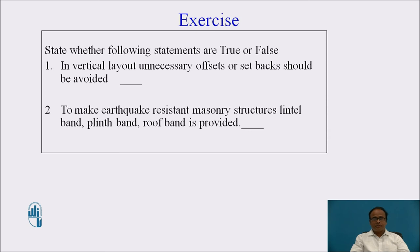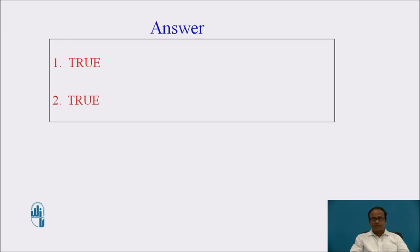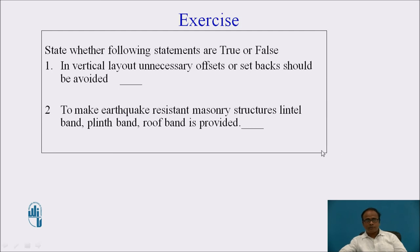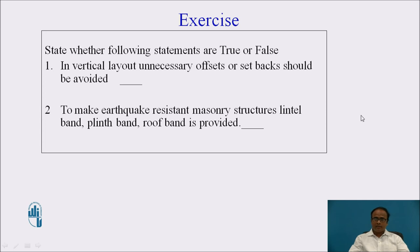These are the questions that you have to answer — pause the video and answer them. The first statement is true because in vertical layout, unnecessary offsets or setbacks should be avoided as they create discontinuity in the transfer of load. The second statement is also true: to make earthquake resistant masonry structures, lintel band, plinth band, and roof band are provided so the structure acts as a single unit and resists earthquake forces efficiently.